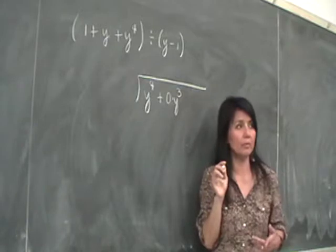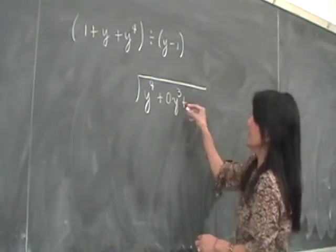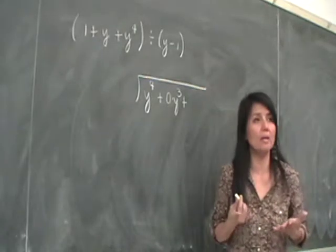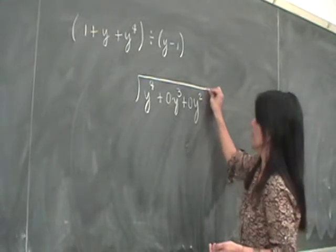Is that clear? You need 0, right? Because it wasn't really there. So you put the 0y cubed, and then after y cubed, you expect to see what? A y squared. Because it's not there, you put 0y squared, right?